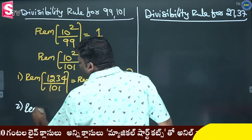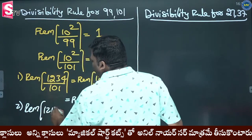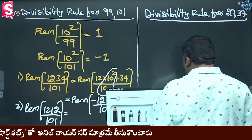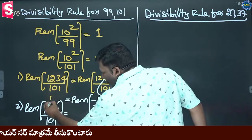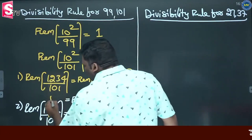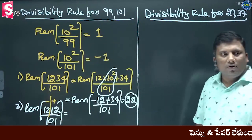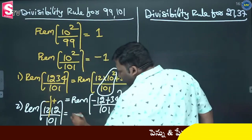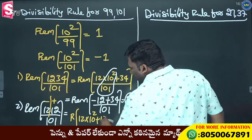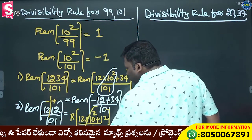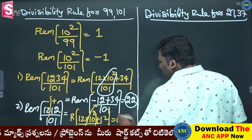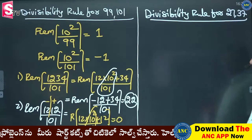Suppose that question: reminder of 1818 divided by 101. The answer — 1818. Starting from the right-hand side, take 2-digit groups. Alternatively plus minus, alternatively plus minus. Why is it plus minus? 12 into 10 square plus 12, divided by 101. 100 divided by 101 is minus, so 12 plus 18, answer is 0.